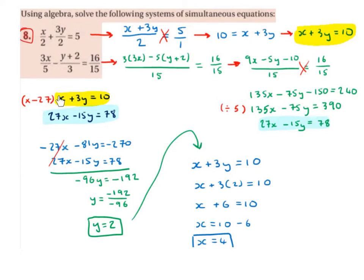So I'm going to multiply the top equation by minus 27. So I get minus 27 by x is minus 27x, minus 27 by 3y is minus 81y, minus 27 by 10 is minus 270. The bottom equation stays the same.